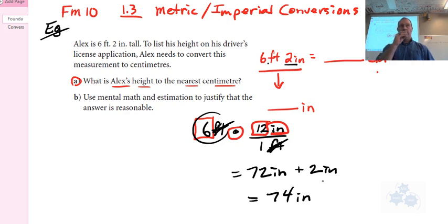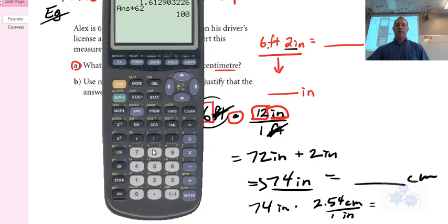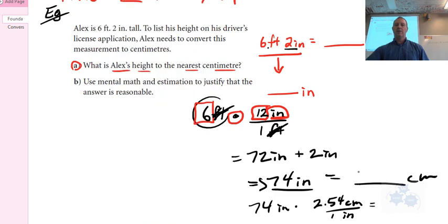So now I need to go 74 inches equals how many centimeters. And again, we could do unit analysis for that. We also have our straight conversion factor. So 74 inches times 2.54 centimeters per one inch. So 74 times 2.54 gives us 187.96 centimeters.